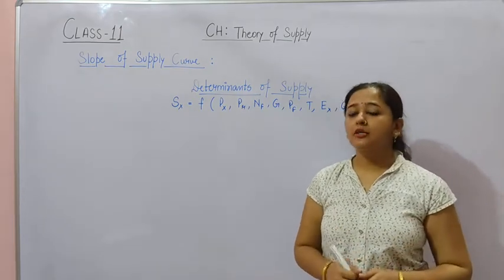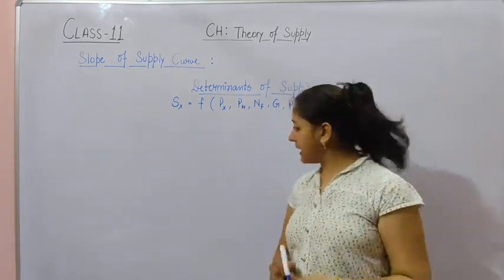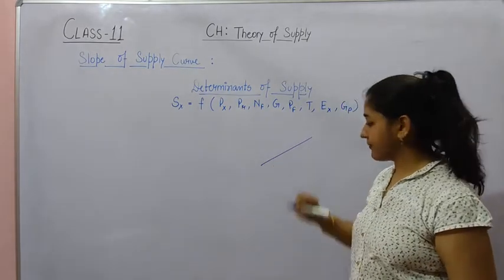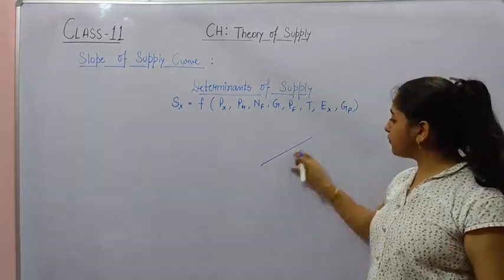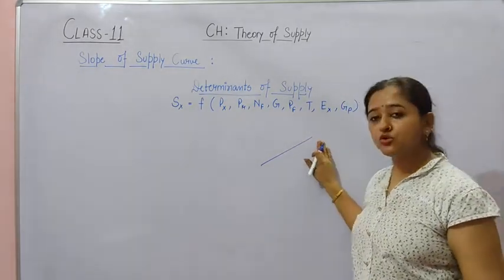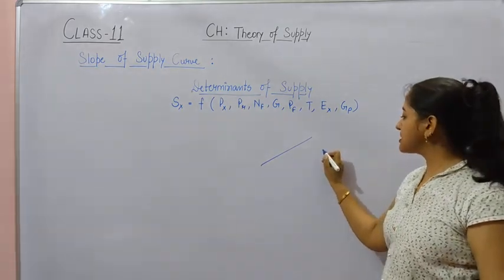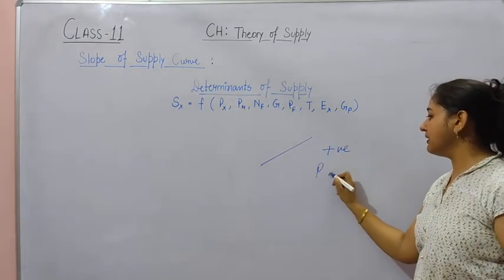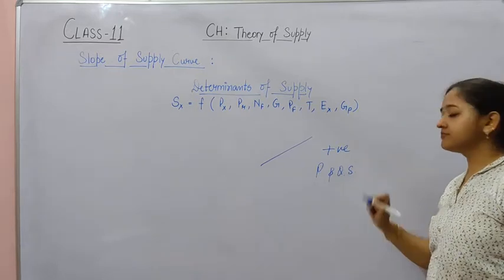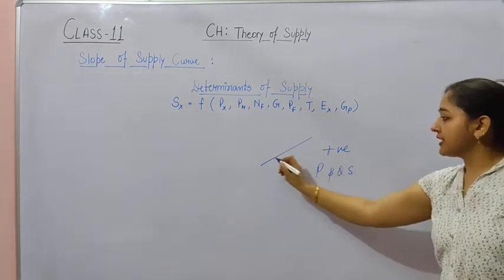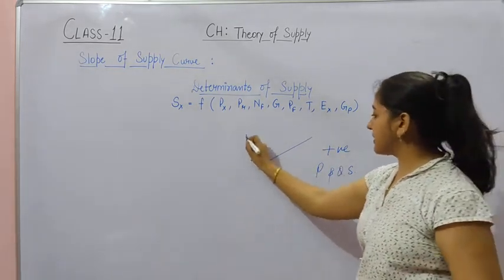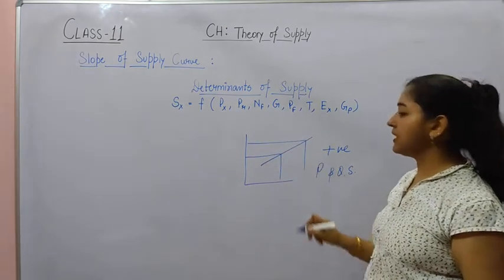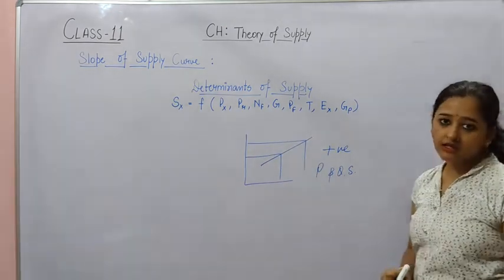We know that our supply curve is upward. And this upward direction shows that there is a positive relationship between price and quantity supplied. That is, as prices are increasing, our quantity supplied is also increasing.